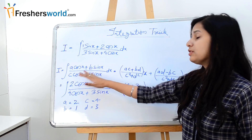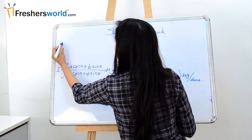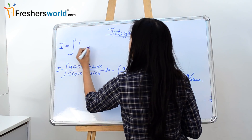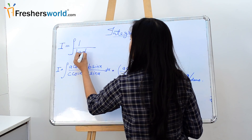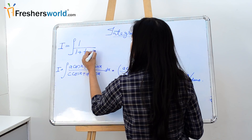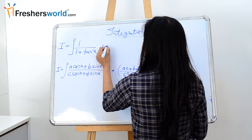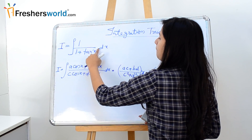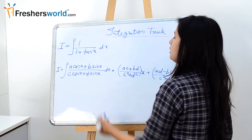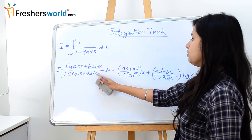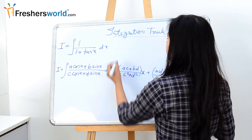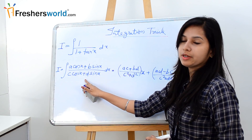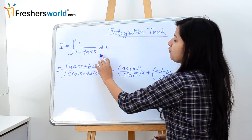Now if you have an equation like I = integration of 1/(1 + tan x) dx, we can use the same formula to solve it. All we have to do is simplify the equation in the required format. As we know, tan x can be written as sin x / cos x.